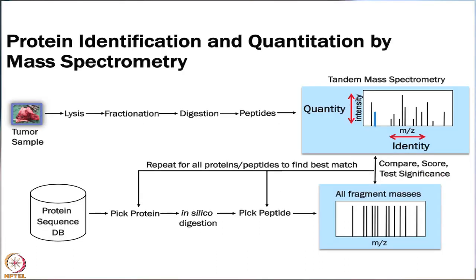Just as a review, I want to really focus on the importance of the protein sequence database. When we are doing protein identification and quantification by mass spec, we have our sample fractionation and digestion, we have peptides, we run them on the mass spec. Then in order to actually identify them, you need a protein sequence database. From our database — something like RefSeq or UniProt — the algorithm picks a protein, does an in silico digestion, picks a peptide, compares fragment masses, and tests for significance.